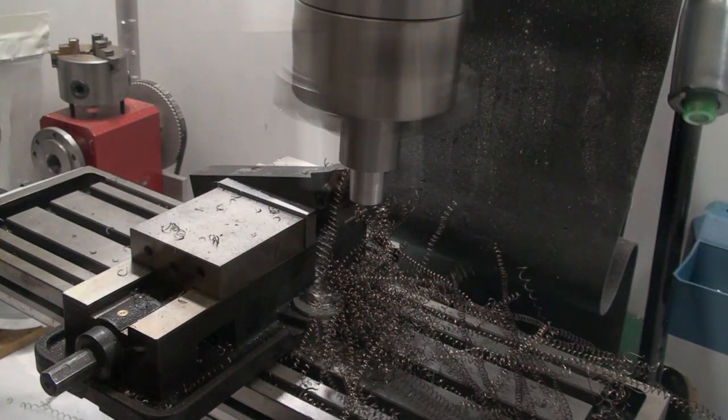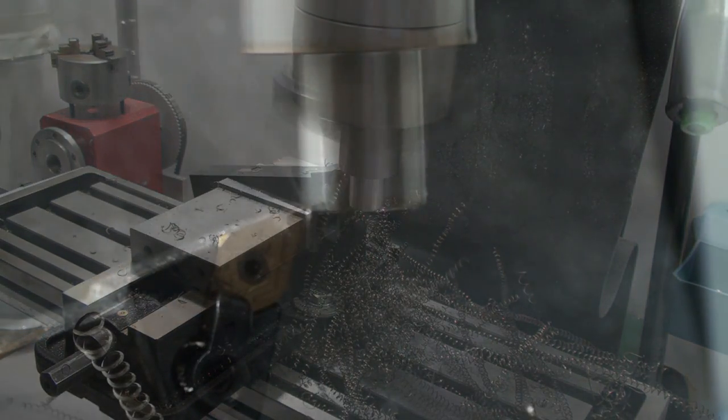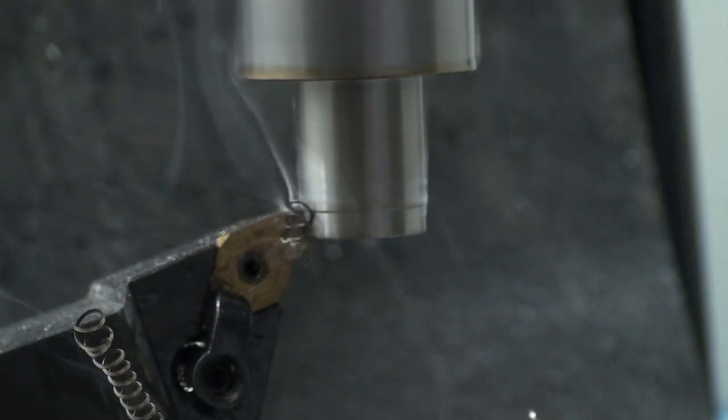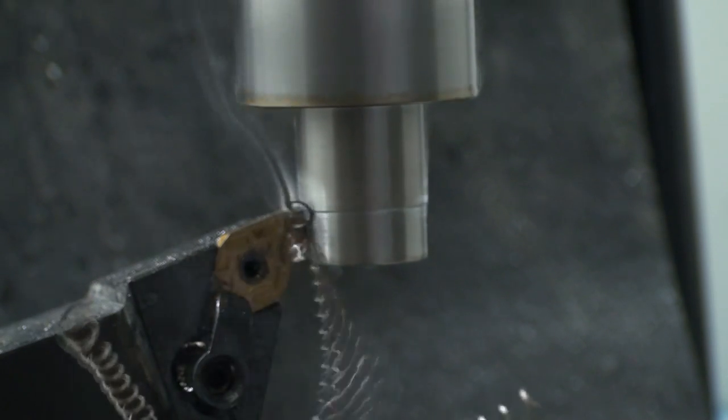The SX-3 mill is not as rigid, so you want to keep it to light cuts at a reasonable feed rate and slow RPM and the cuts work out fine.